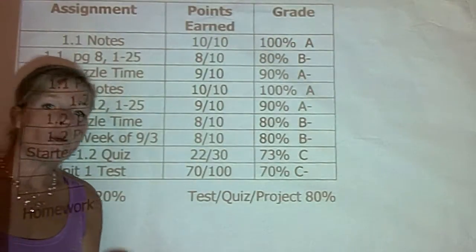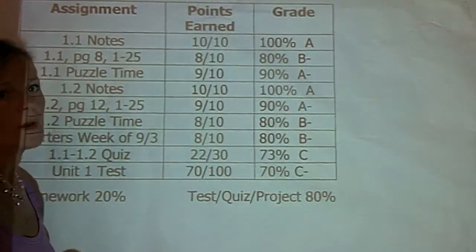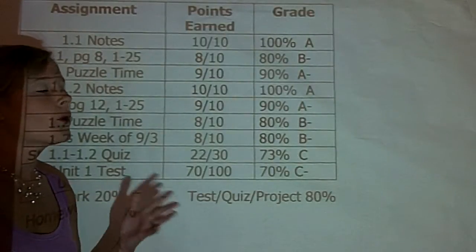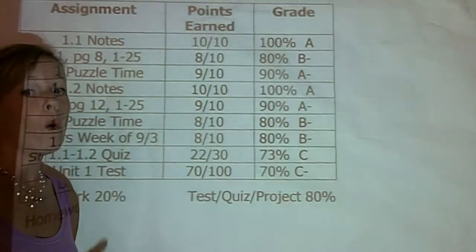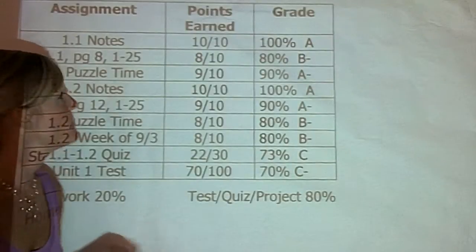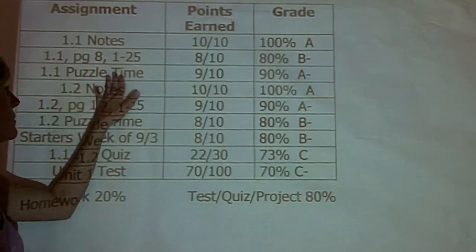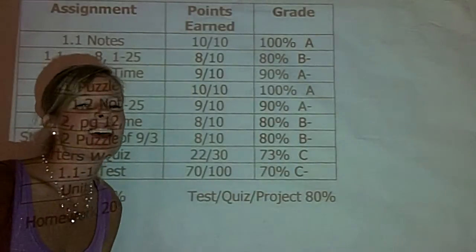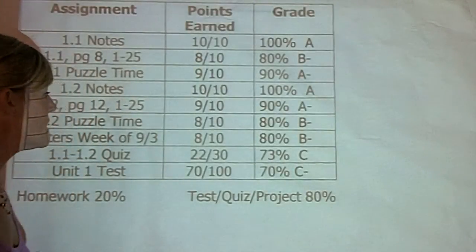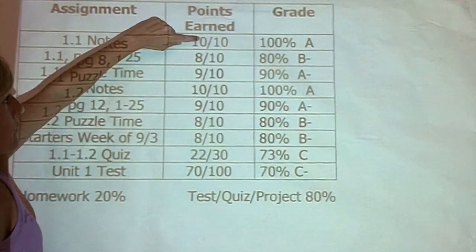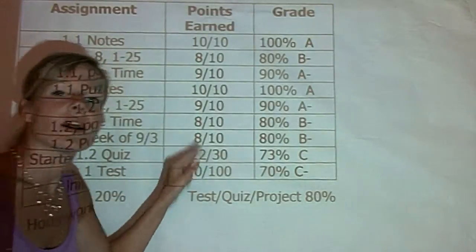First off, anything that's a homework assignment is going to be worth 20% of their grade. So, we're going to add up all of the homework points first, not the percentages. Homework points, we have notes and homework assignments that are listed. Anything that's a test or quiz will be listed as a test or quiz. So, it looks like the first seven assignments here are homework assignments.